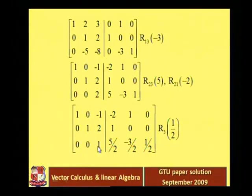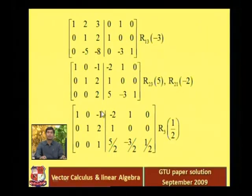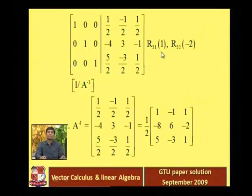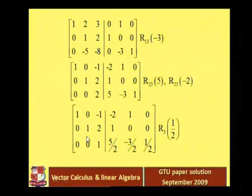Now in the third row we have 1 as the leading entry, and we want zeros above it. So we multiply the third row by minus 2 and add into the second row, and multiply the third row by 1 and add into the first row. The third row stays as it is.